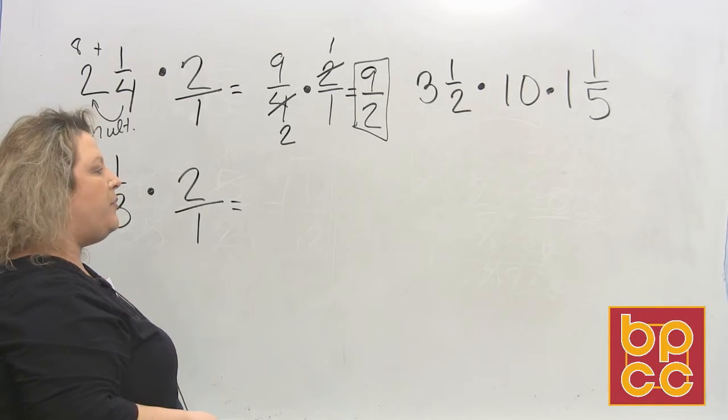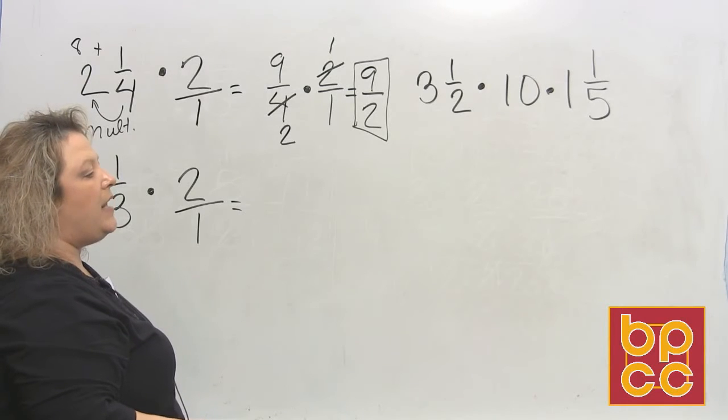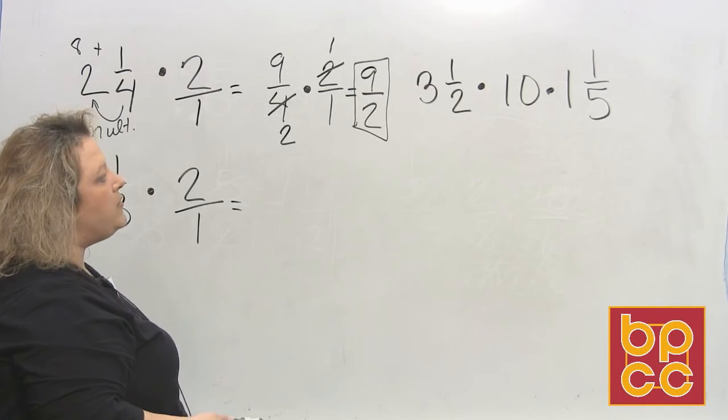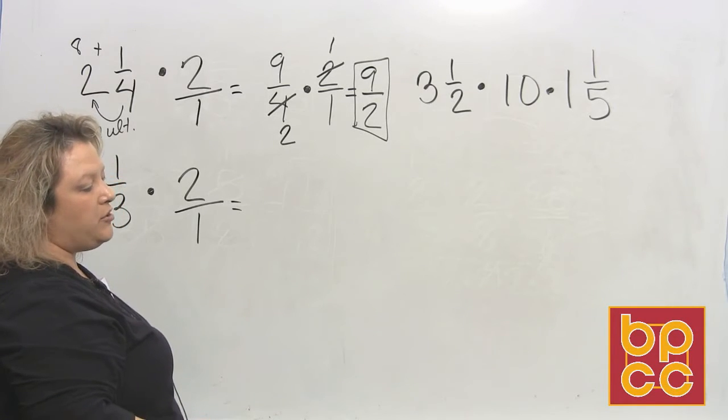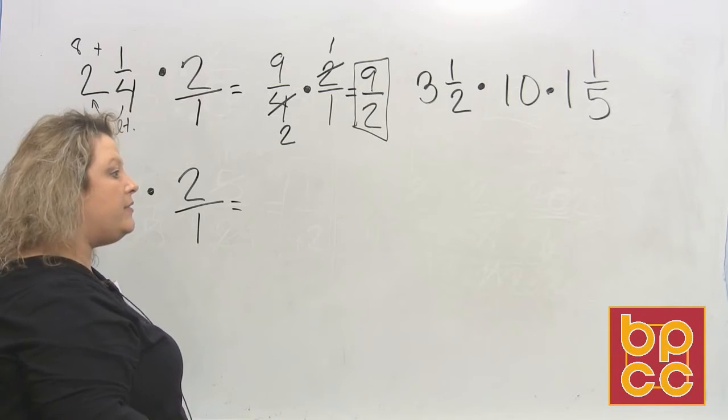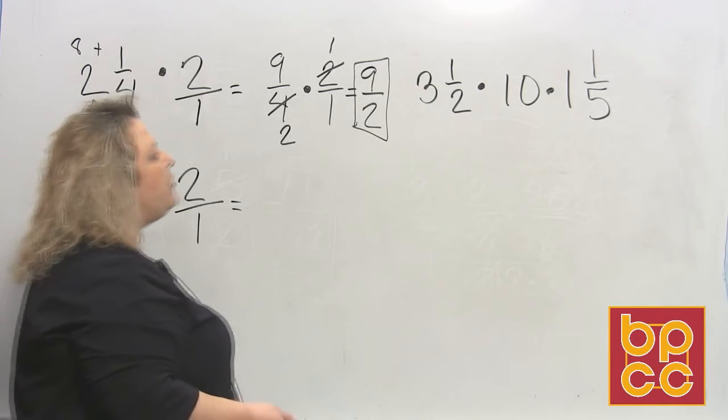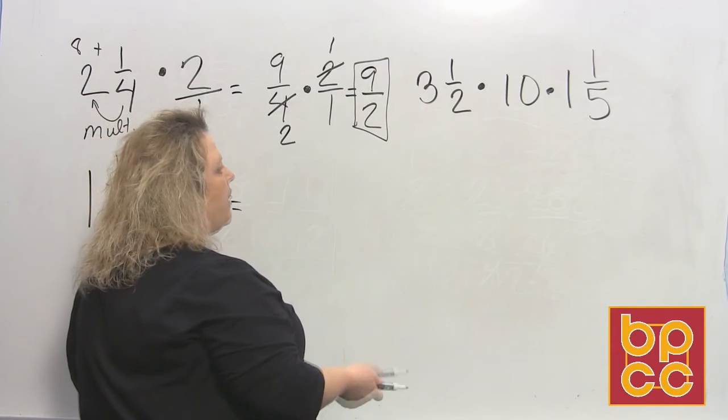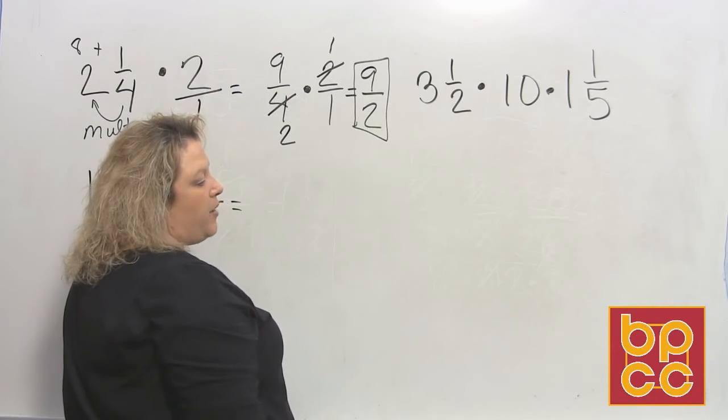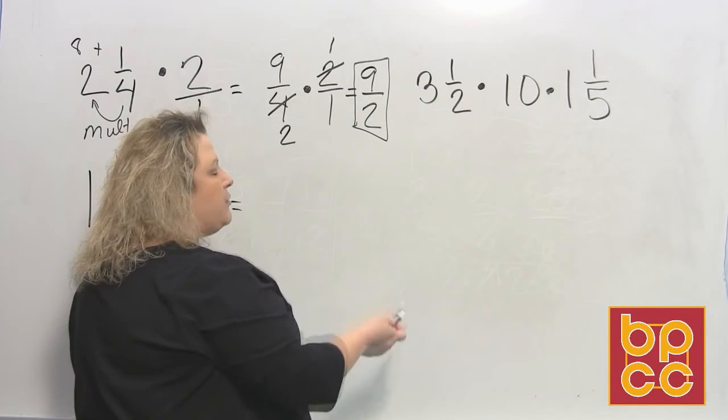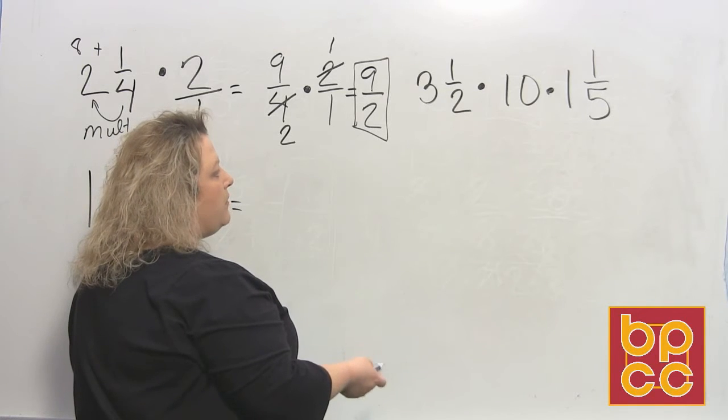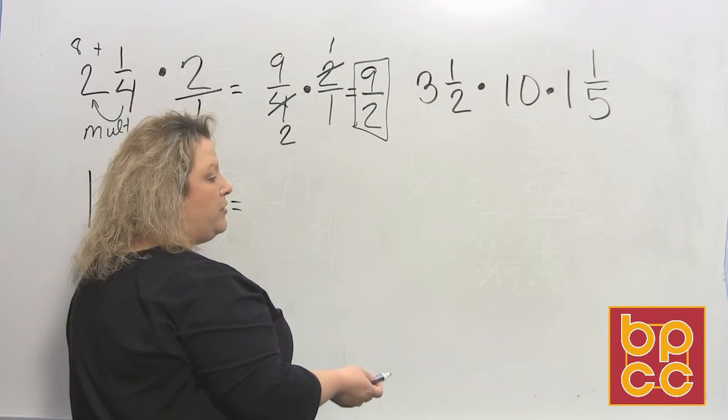But when you're talking about cups of brown sugar, you don't measure 9 halves cups. You always want to make sure that it's a measurement that is accurate to what you're doing. Since you are doing measuring brown sugar, you want to turn that improper fraction back into a mixed number. So you have to remember that rule. To turn that back into a mixed number, what do you do? You divide.